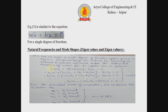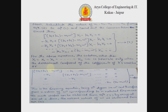Consider the multi degree of freedom system given in the figure. For determining its natural frequencies and mode shapes, the differential equations of motion for the system are shown by equation number one. For the principal mode of vibration, we assume solutions of the harmonic form as shown in equation number two. Substituting x1, x2, x3, and xn from equation two into equation one and cancelling the common term sin(ωt), we get the final equation shown as equation three.